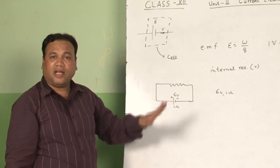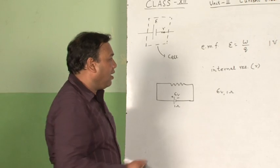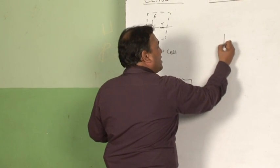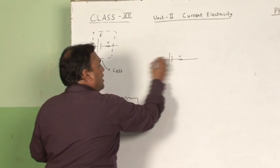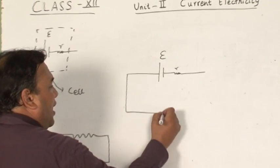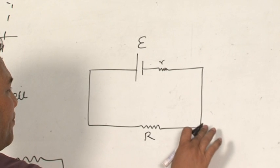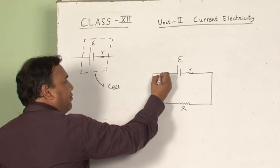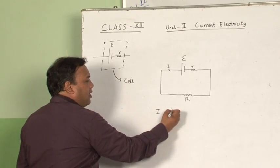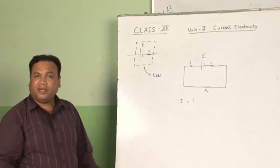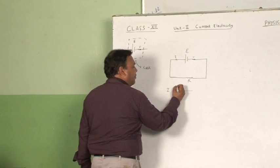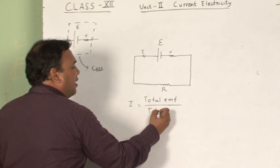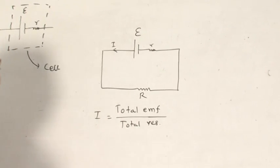Using this, I would like to derive a simple circuit equation. I will take one cell — this resistance represents the internal resistance, this is EMF — and connect it across the external resistance R. Current flows through it. The current equals total EMF upon total resistance. How much is the total EMF here? It is E. The total resistance is the effective resistance of internal resistance r and external resistance R.